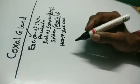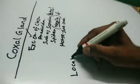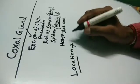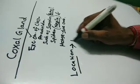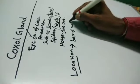Now, the location of the coxal gland: it is situated at the base of walking legs.